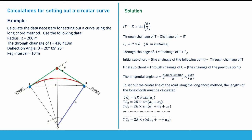Now let's take a numerical example. Calculate the data necessary for setting out a curve using the long chord method. We have been given: radius R = 200 meters, chainage of I = 436.413 meters, deflection angle θ = 20° 09' 26", and a peg interval of 10 meters. That means along the center line, we fix a peg every 10 meters. Now we have all the data needed for calculations.